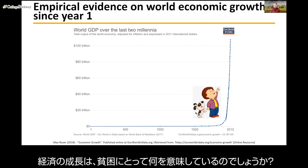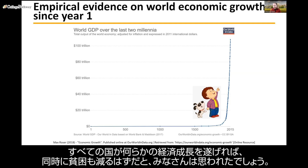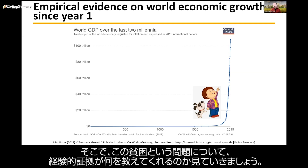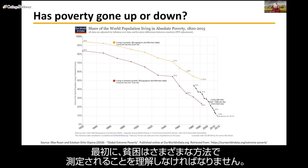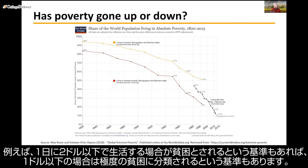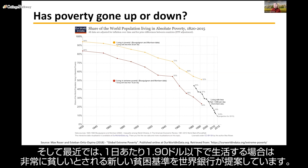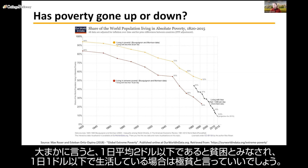If economic growth has increased, what does that mean for poverty? You would think that if all countries experience economic growth, poverty should actually decrease. First we have to understand that poverty is measured in many different ways using so-called poverty lines. Some suggest you're poor if you live on less than two dollars a day; others suggest you're extremely poor if living on less than one dollar a day. More recently, the World Bank introduced a measure of $1.90 a day.